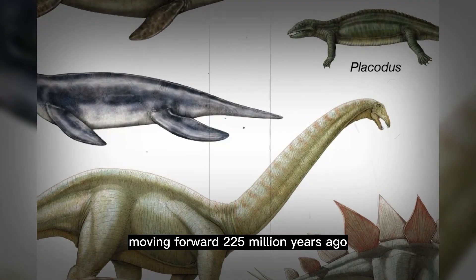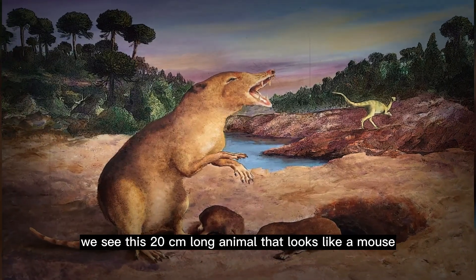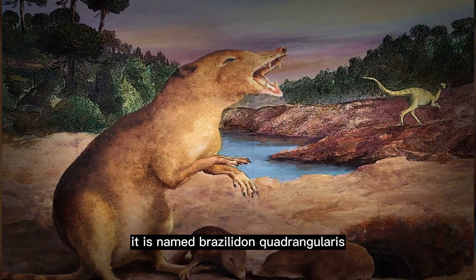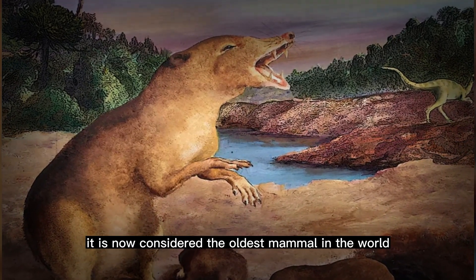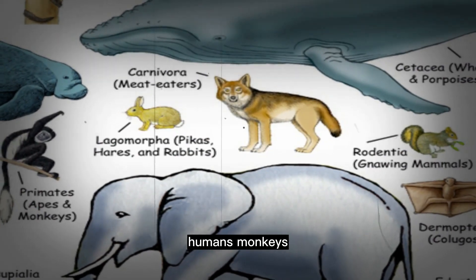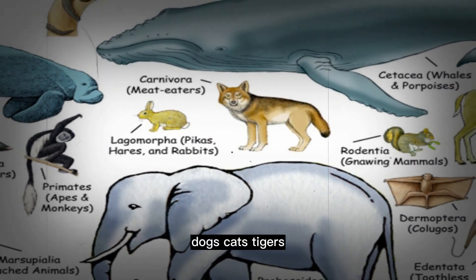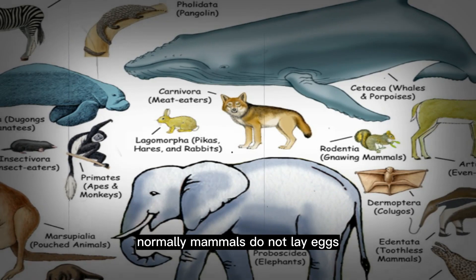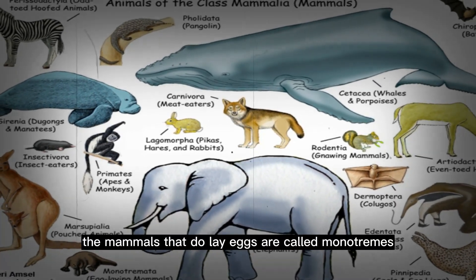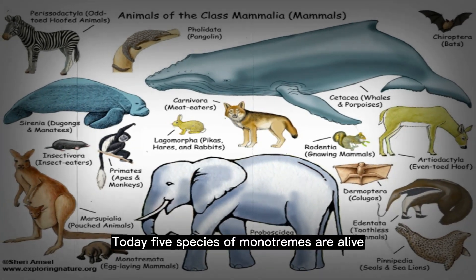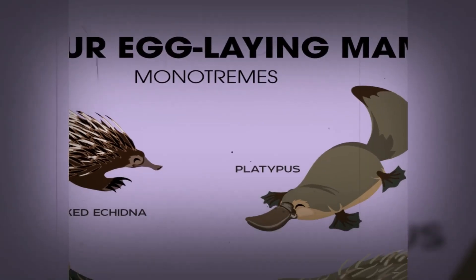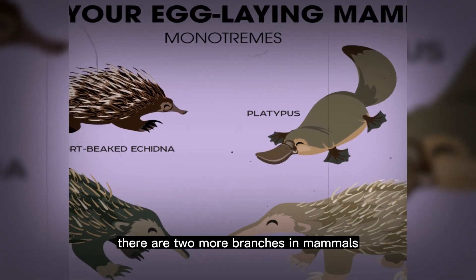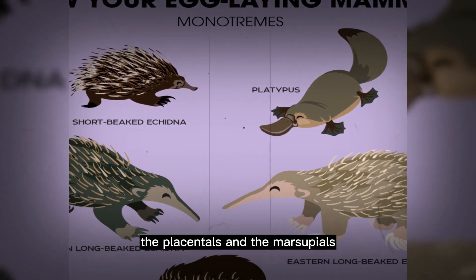225 million years ago, we see a 20-centimeter-long animal that looks like a mouse, named Brasilodon quadrangularis — now considered the oldest mammal in the world. Humans, monkeys, dogs, cats, tigers, lions — all these are mammals. Normally, mammals do not lay eggs, but exceptionally, the mammals that do lay eggs are called monotremes. Today, five species of monotremes are alive, one of them being the platypus. Apart from monotremes, there are two more branches in mammals: the placentals and the marsupials.